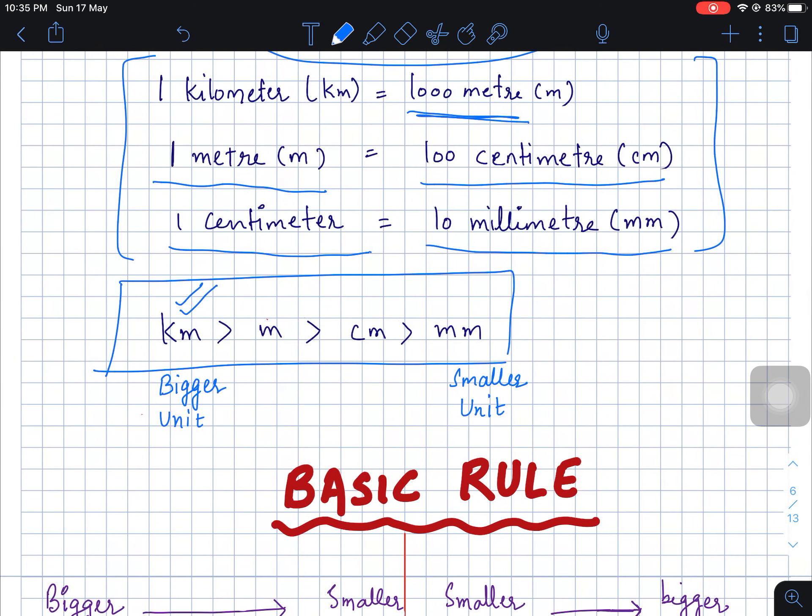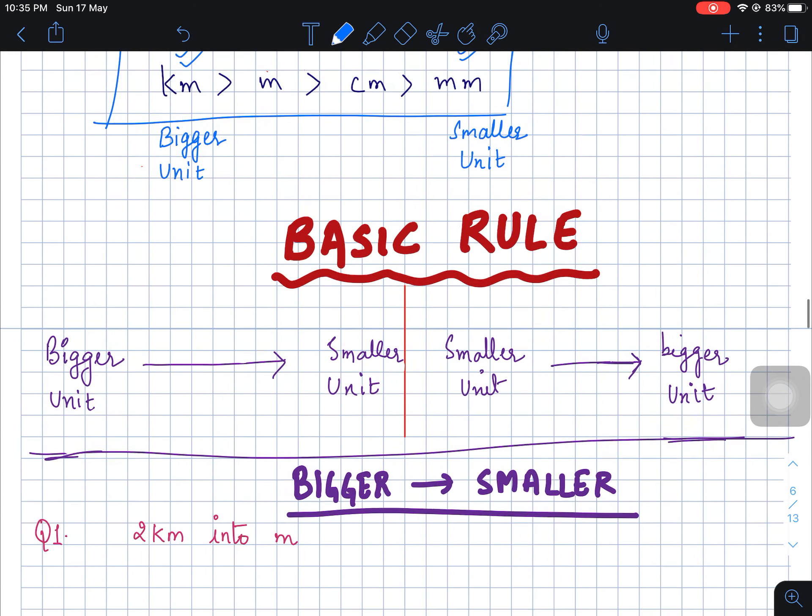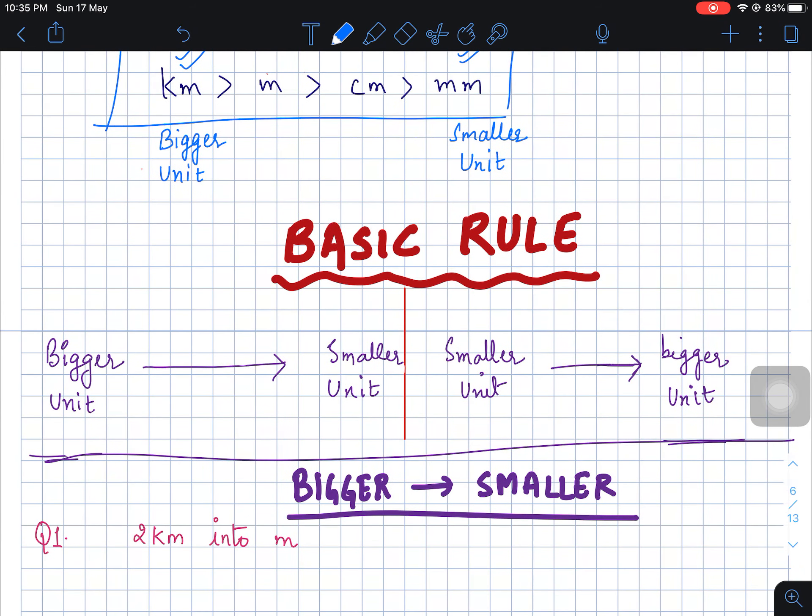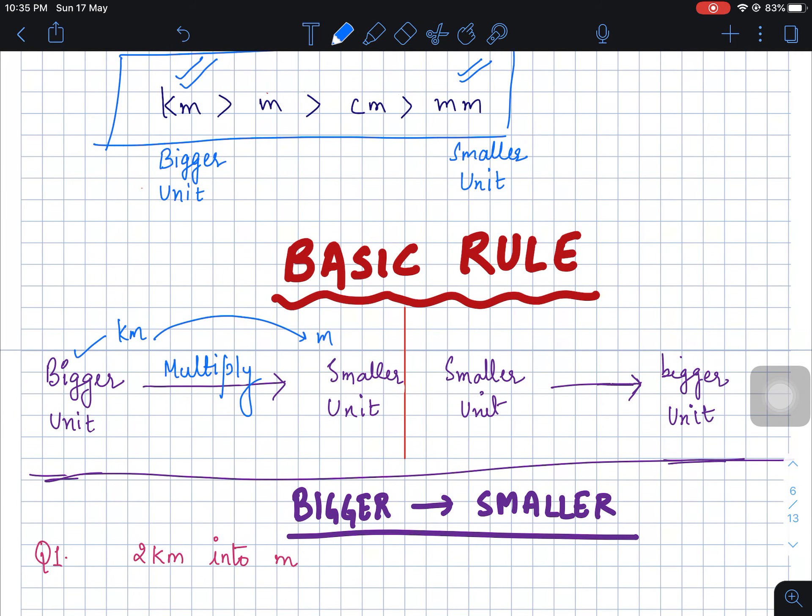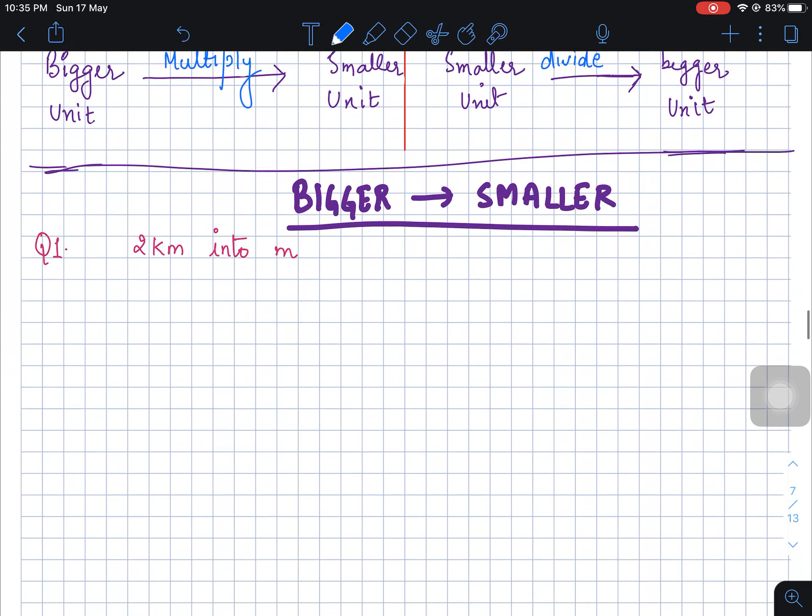Of all these units, km is the biggest one while mm is the smallest one. We have a basic rule: whenever we convert some bigger unit to smaller unit, like converting km to m, then we always multiply. And if we do otherwise, like convert a smaller unit like m into km, we do the opposite, we divide.